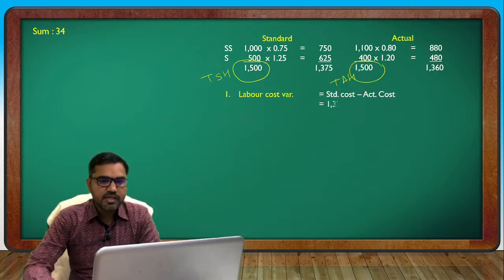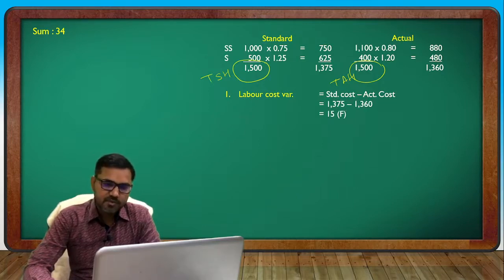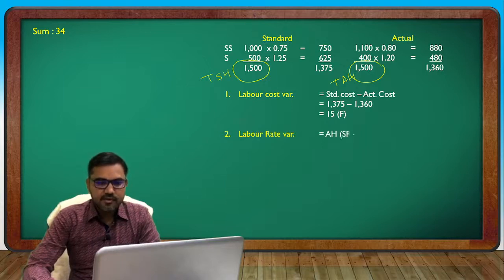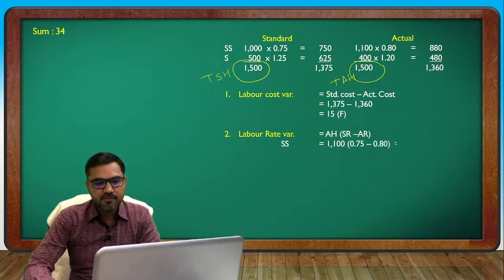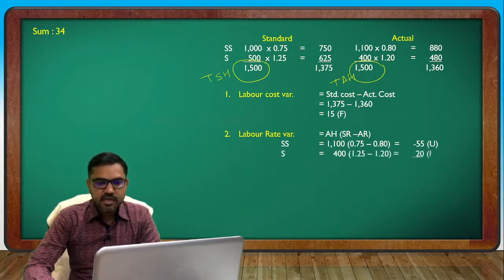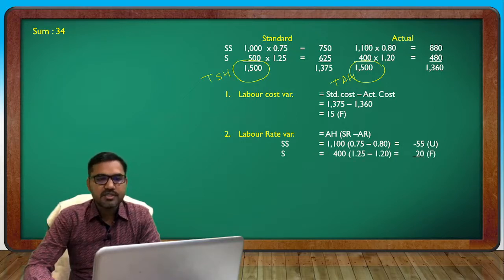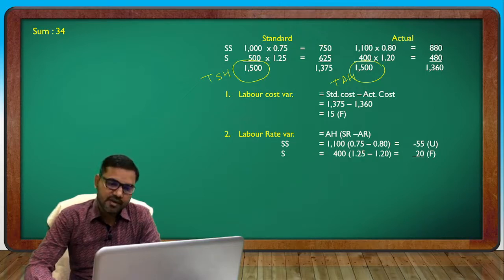Standard cost, rate formula: SH at SR minus AH at SR. Semi-skilled: SH at 1100, skilled: SR is 0.75 and 1.25 and actual rate is 0.80 and 1.20.